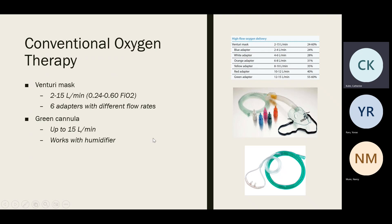The Venturi mask is more specific for how much FiO2 you can deliver. It has the traditional face mask with vents and adapters — different colors correspond to different FiO2s and liters per minute. The green cannula can go up to 15 liters per minute and works with a humidifier.